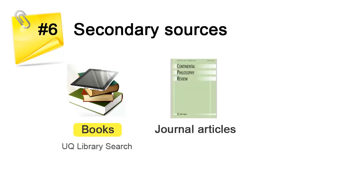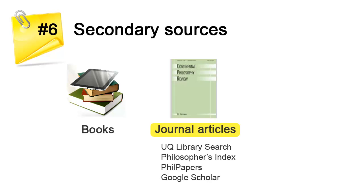You will usually be expected to use scholarly resources such as journal articles. Journal articles are written by philosophers for a philosophical audience and are published in academic journals. You can find journal articles for philosophy by searching UQ Library Search, Philosopher's Index the key database for philosophy, and online indexing tools such as Philpapers and Google Scholar. Access these databases via UQ Library Search or the Library Guide.